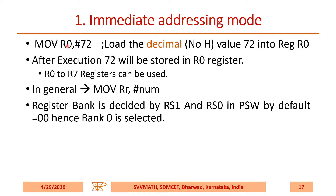Instead of R0, you can use any register between R0 to R7. In general, you can write MOV Rn, #num. One important point to remember: the register bank is decided by RS1 and RS0 bits in the PSW. By default, RS1 and RS0 are both 0, so bank 0 is always selected. Throughout our discussion, remember that bank 0 is selected by default.